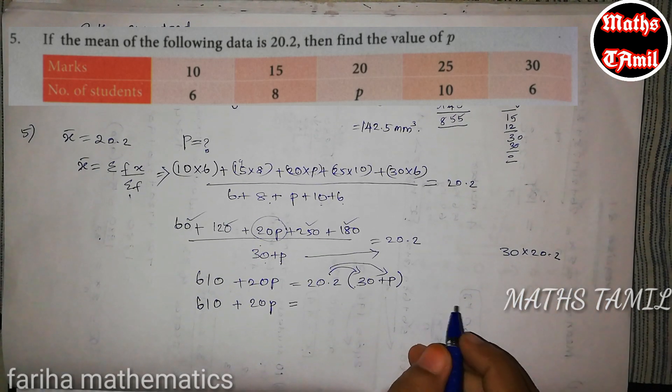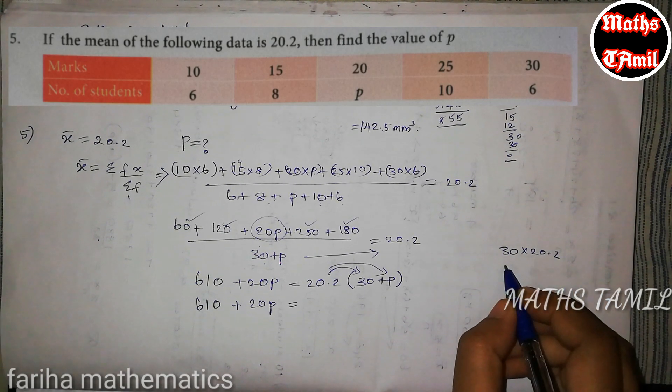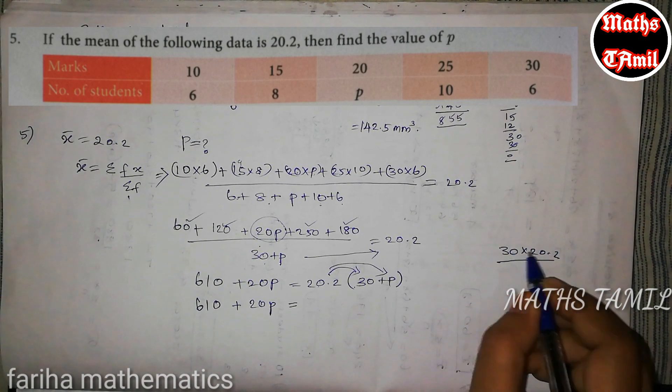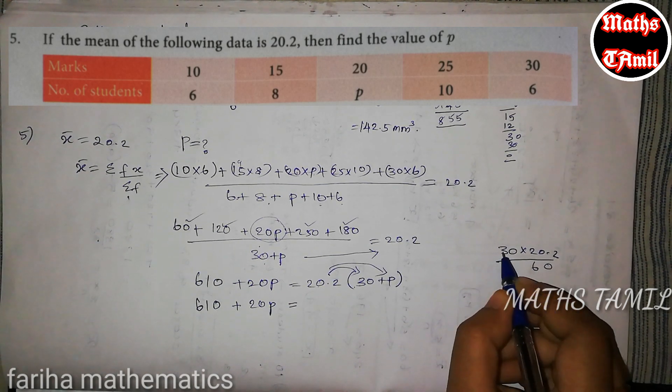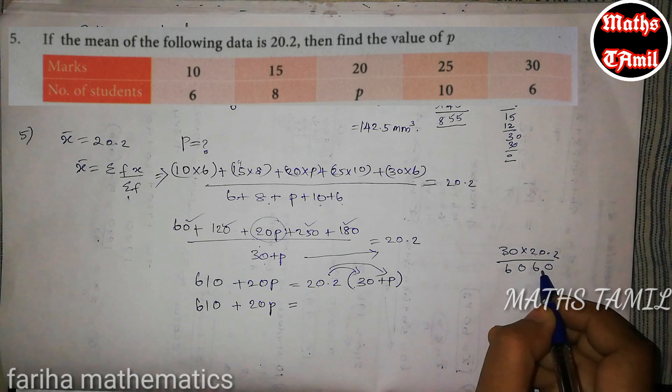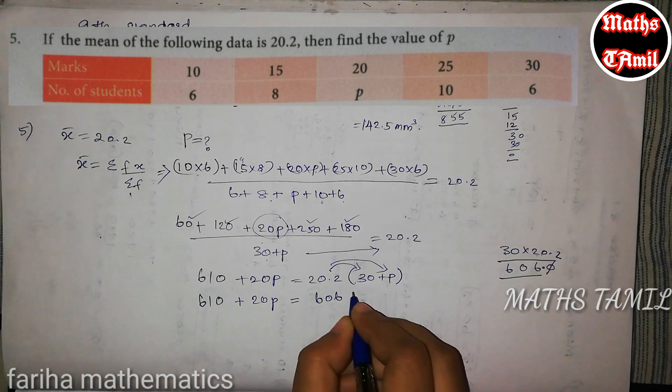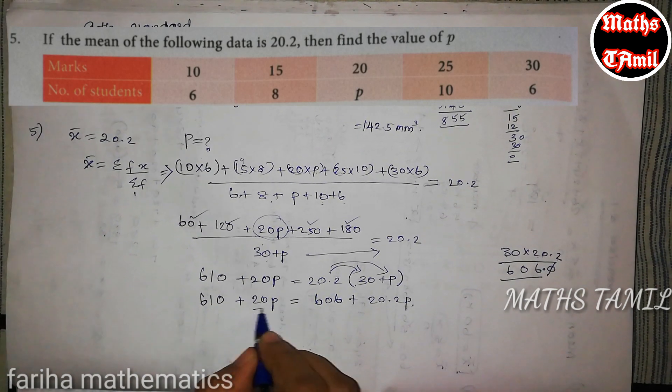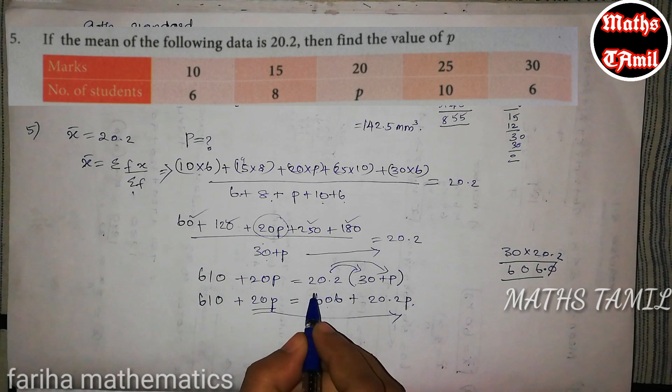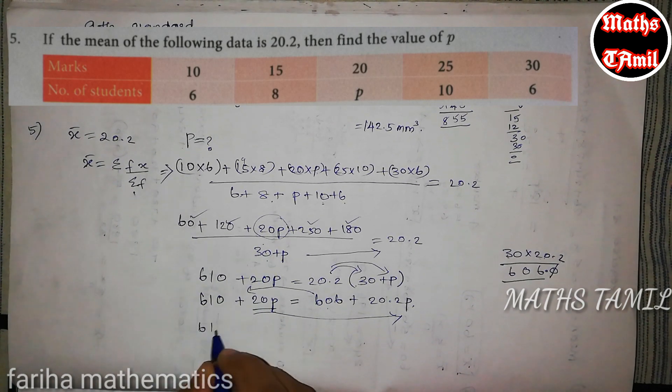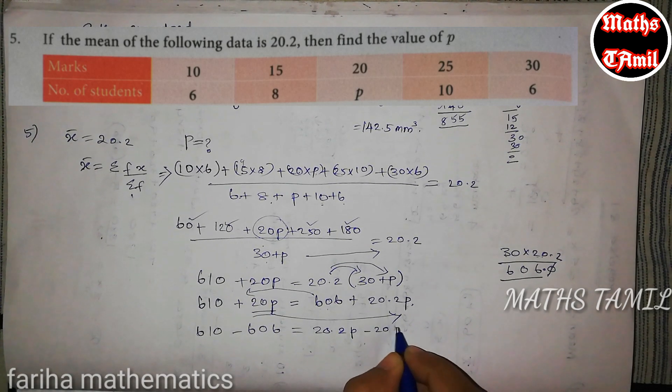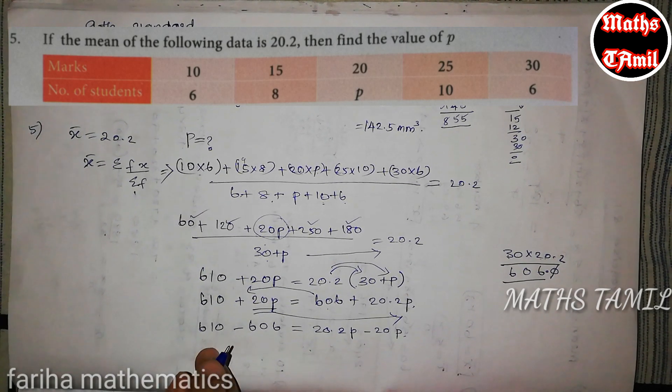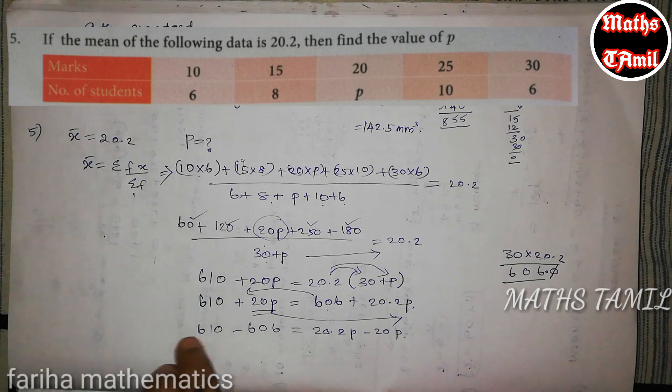We need to multiply 16 plus 20P. That is equal to 30 into 20.2. So, 30 into 20.2. Now, here we have 0. 606 plus 20.2P. Now, here P, we need to multiply 610 minus 606. That is equal to 20.2P minus 20P.